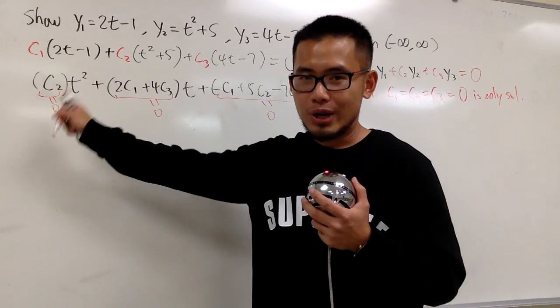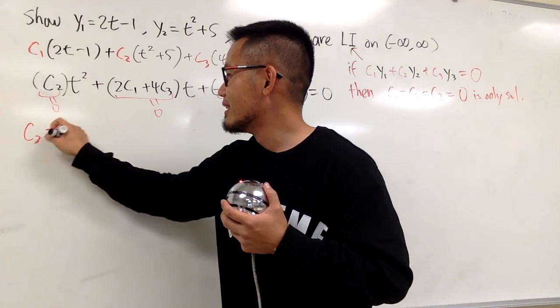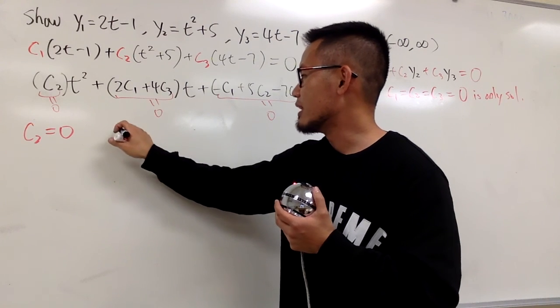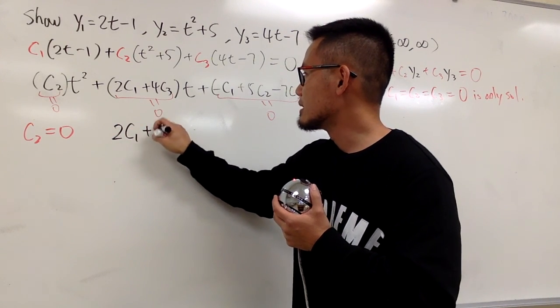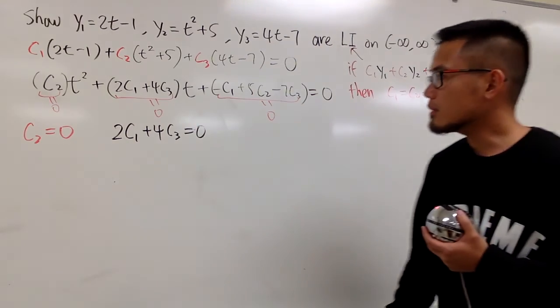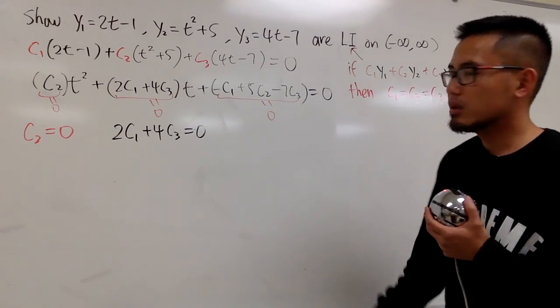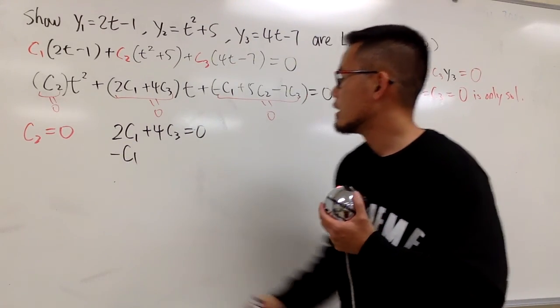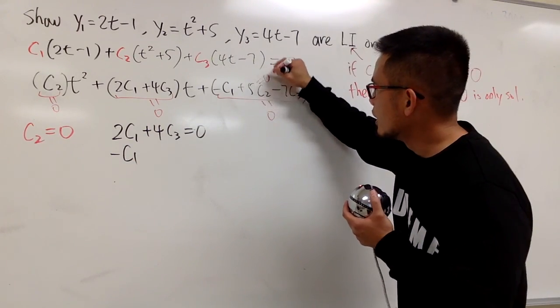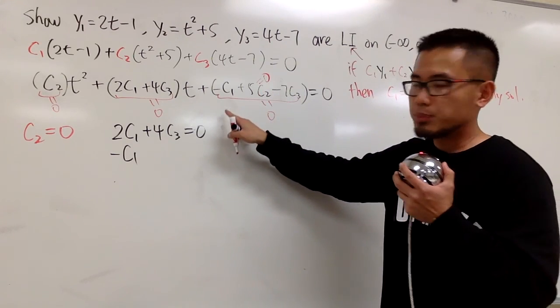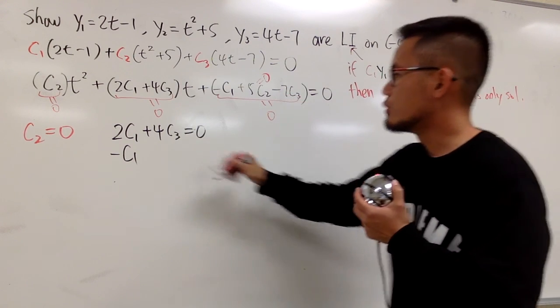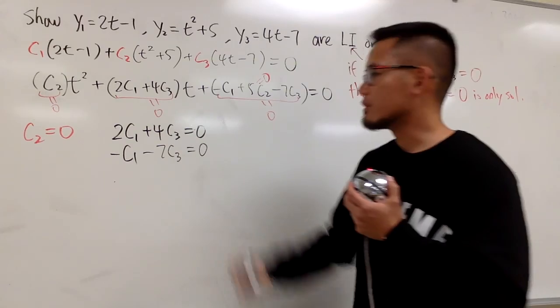Well, you have to, c2 is equal to 0 already. You know that for sure already, isn't it? From here, I don't know what this is. I just have to say this is 2c1 plus 4c3 equals 0. I don't know c1, I don't know c3 at the moment. Well, for this term here, we have negative c1, and guess what? c2 is equal to 0 already, so we can get rid of this right away, right? So I just put down negative c1 right here, and I also put down just the negative 7c3 right here, minus 7c3 equal to 0.